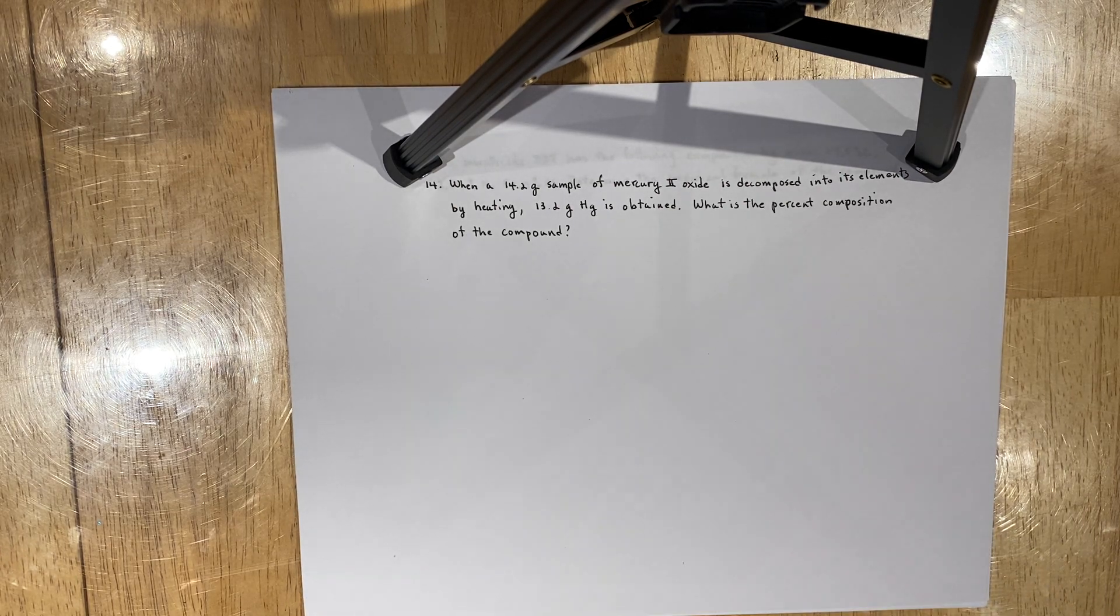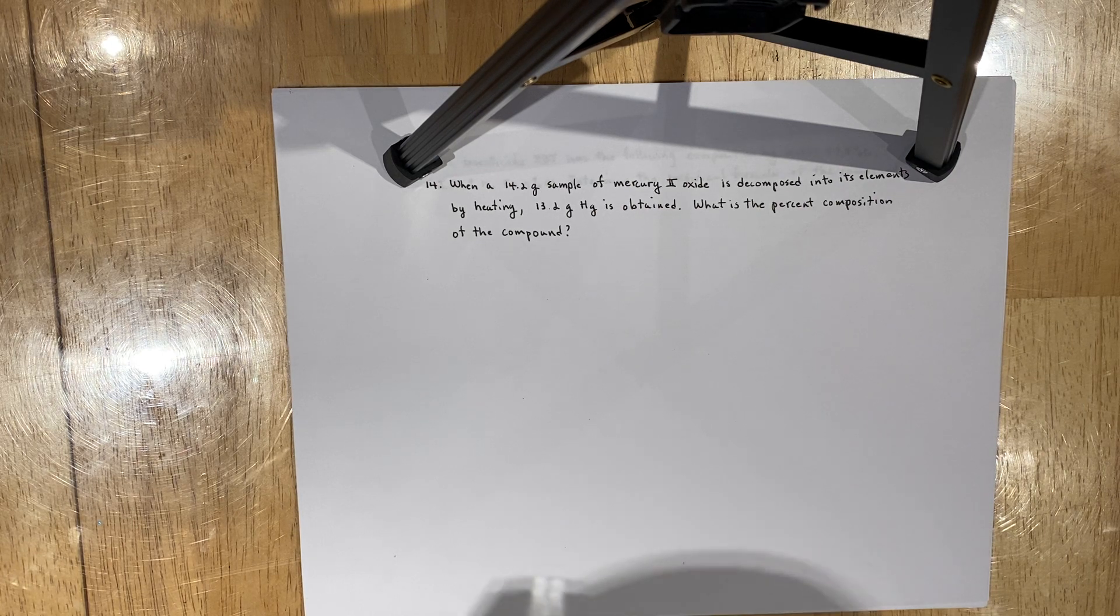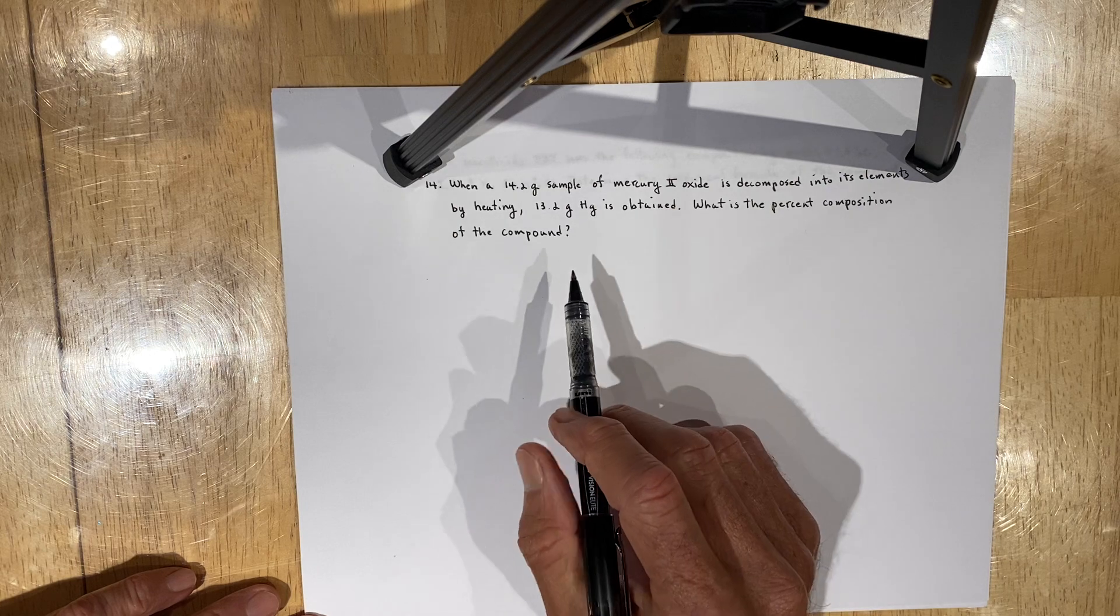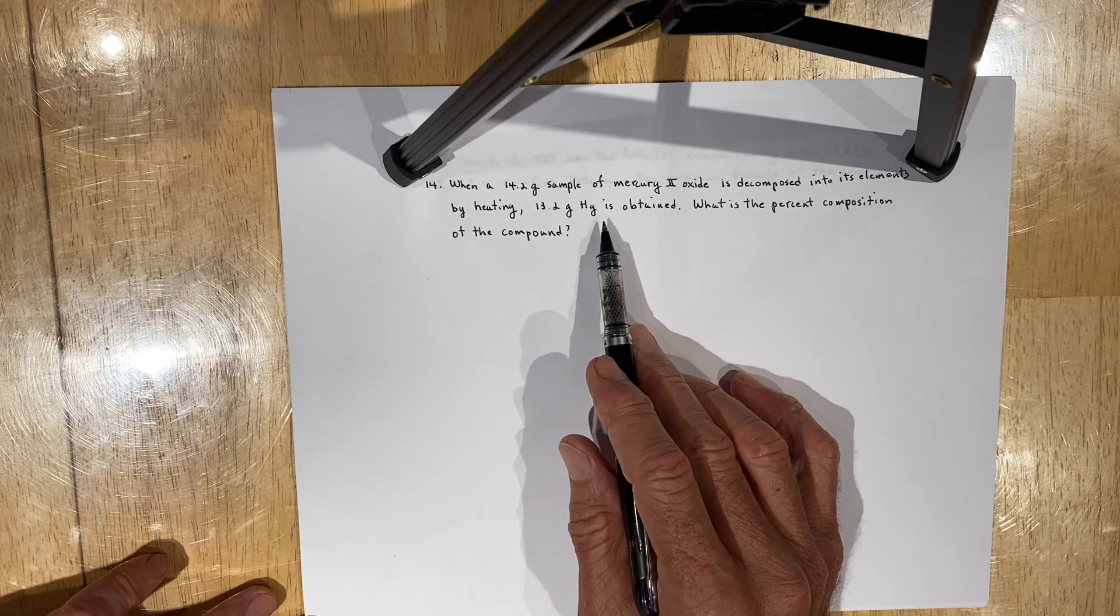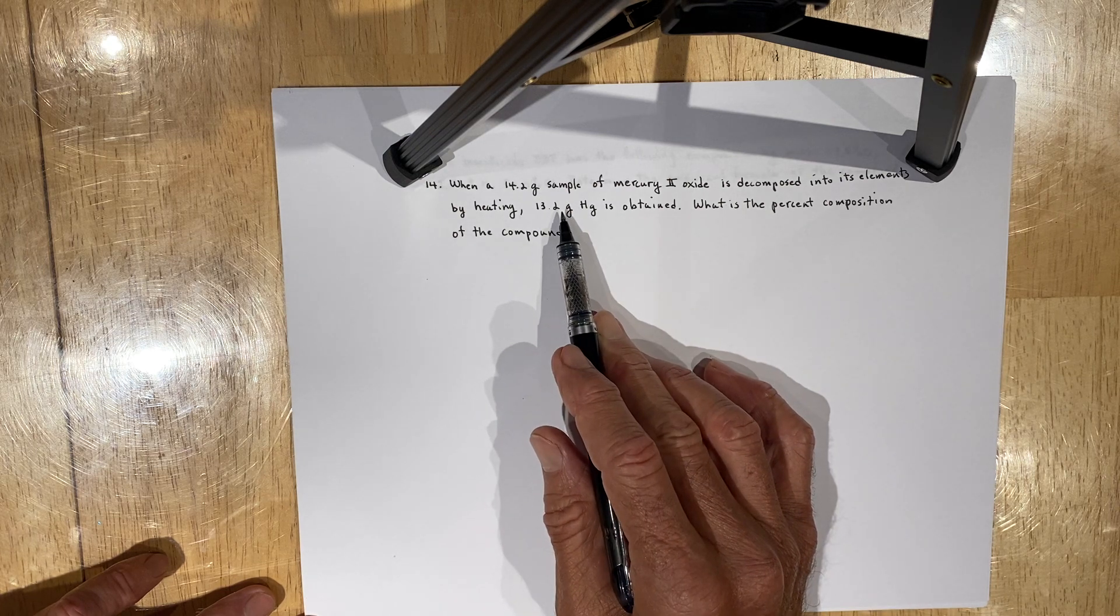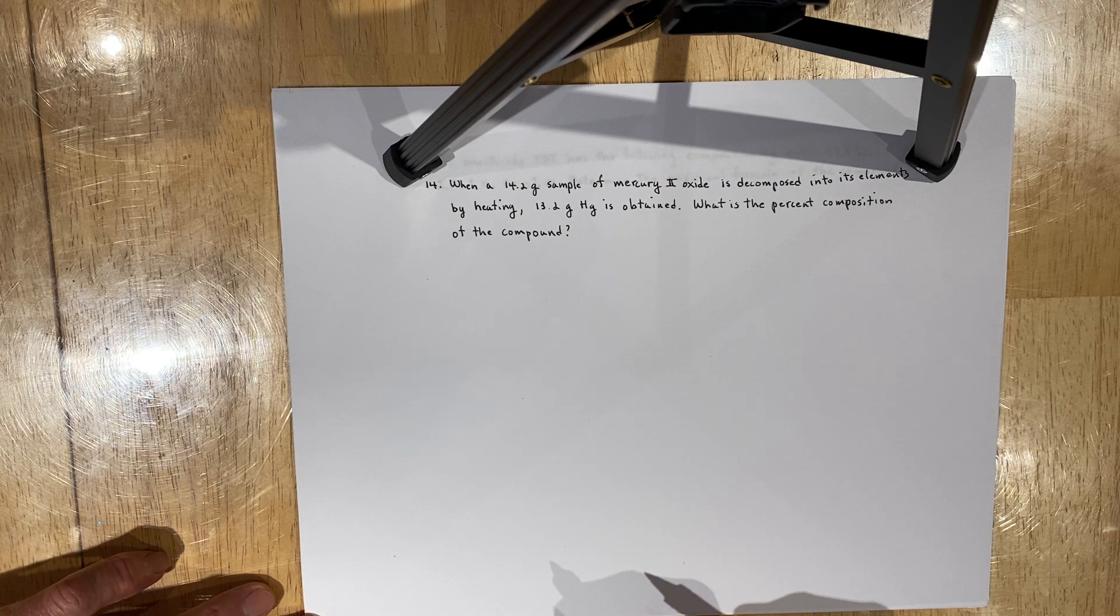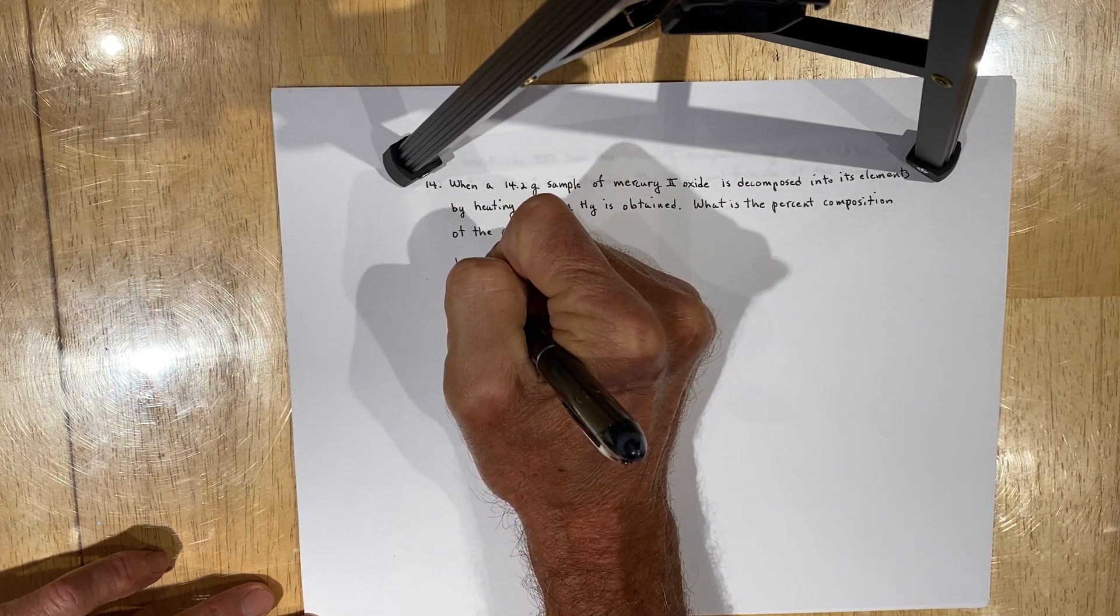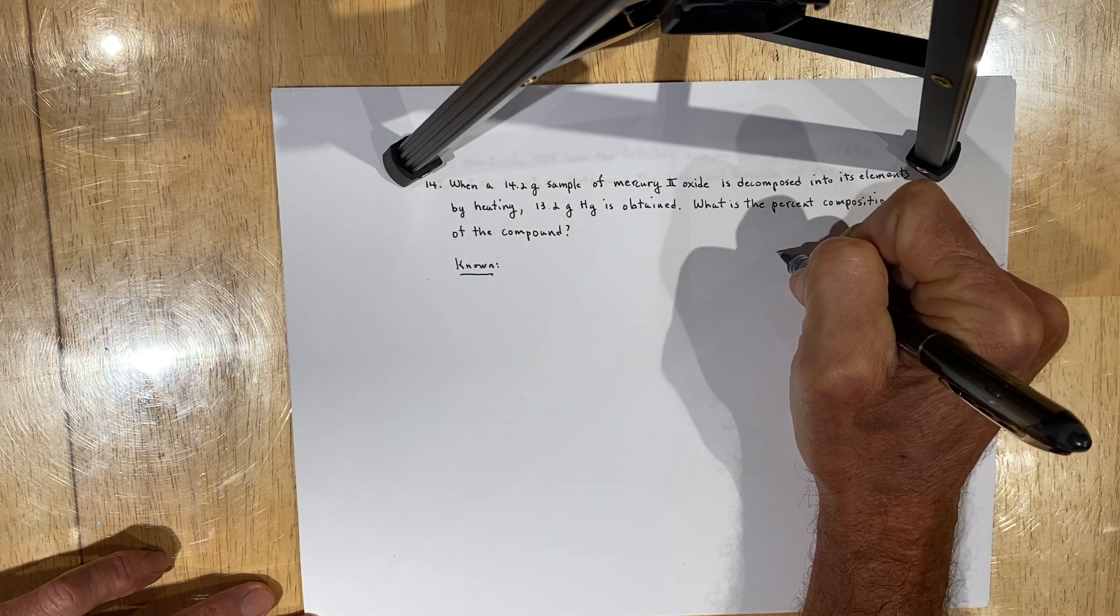This is a standard problem that chemists run into, and in particular honors chemistry students, which is to determine the percent composition of a compound. You've been given the mass of the compound, which is 14.2 grams, and the mass of mercury produced in a decomposition reaction. Using that information and your knowledge that percent by mass is the part over the whole or the mass of an element divided by the mass of the compound, we can attack this problem vigorously by splitting it up into the known section, the unknown section, and a solution.